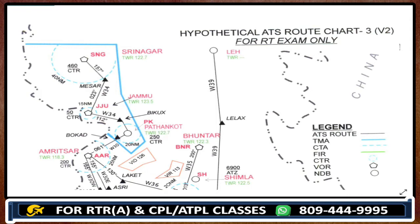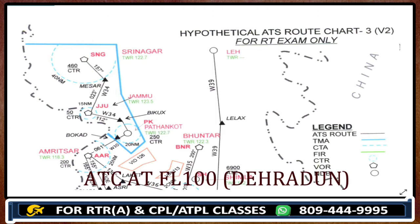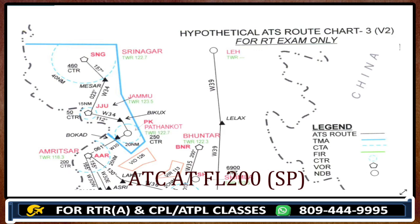We are discussing another example. You have to find out ATC at flight level 5-0 over Dehradun, and ATC at flight level 1-0-0 over Dehradun. Also, you have to find out ATC over Sierra Papa at flight level 2-0-0. We will discuss all three examples.